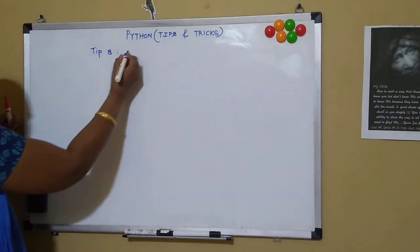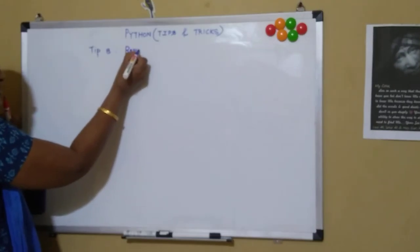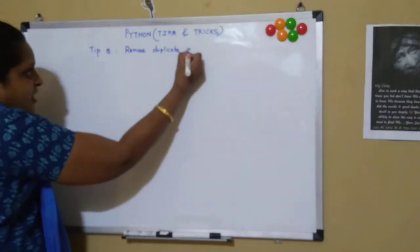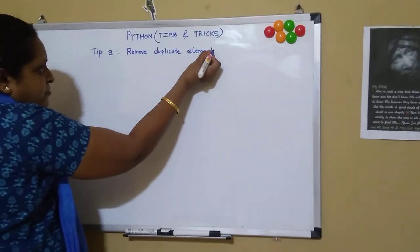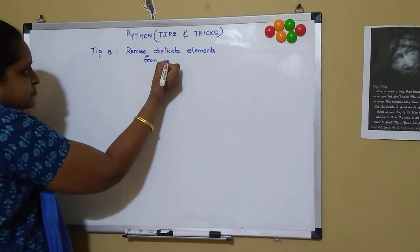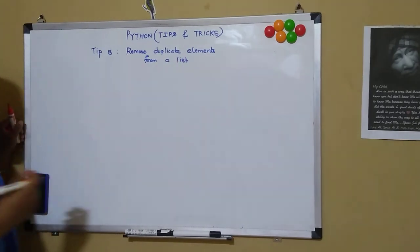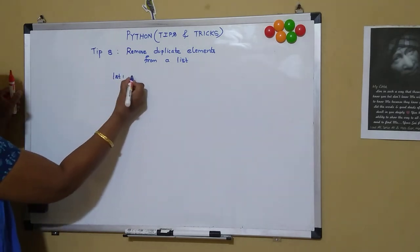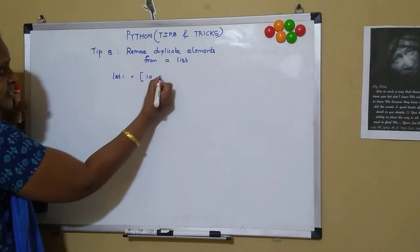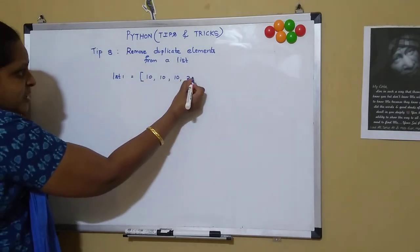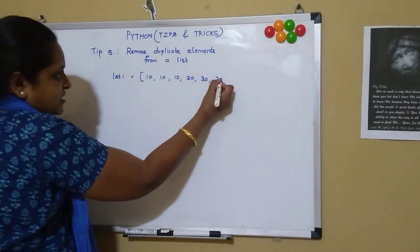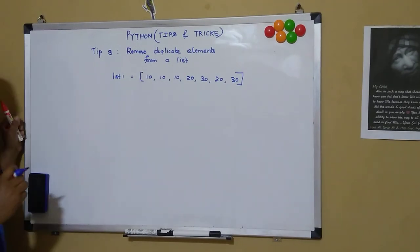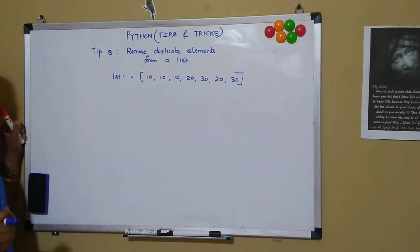To remove duplicate elements from a list: a list can hold duplicate values. Suppose I have list1 equal to 10, 10, 10, 20, 30, 20, 30 — it is having duplicate values. What is the simple way of removing duplicates from the list?